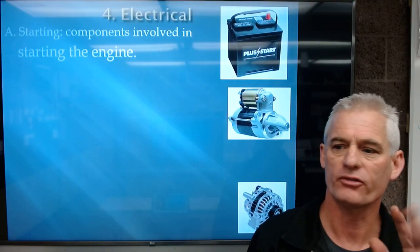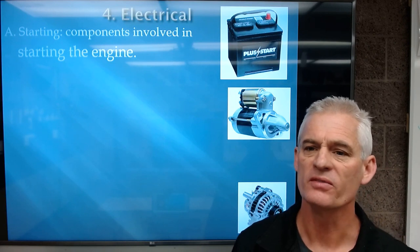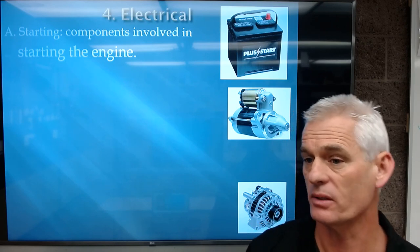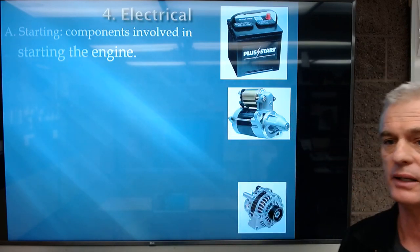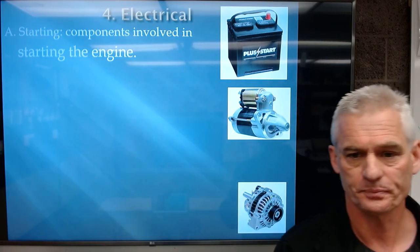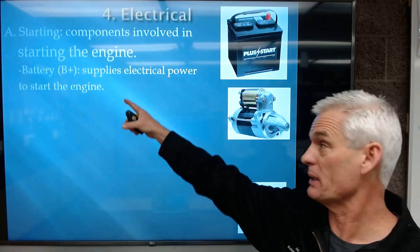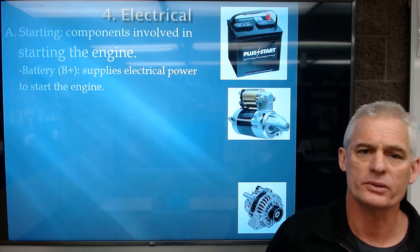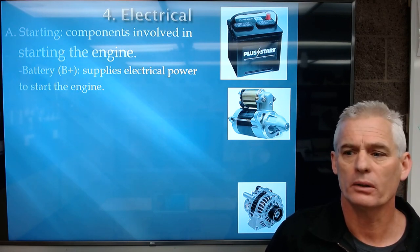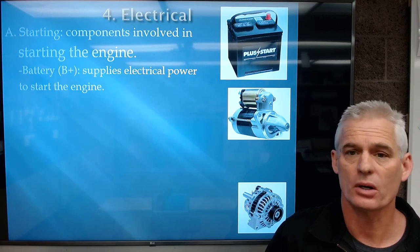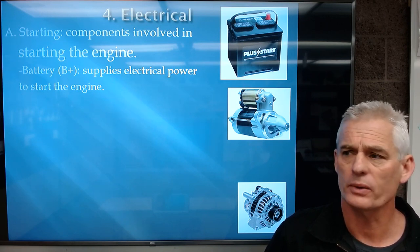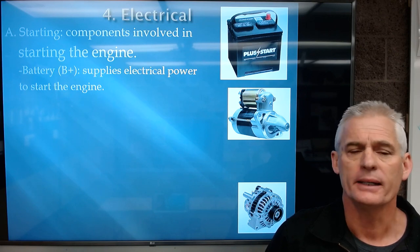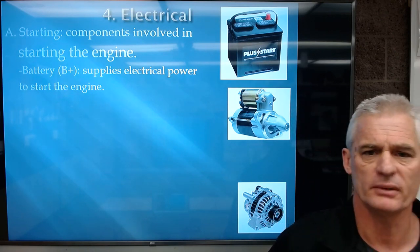Next we want to look at our fourth major category of the vehicle: electrical. Electrical includes a number of subsystems. The first is the starting system — all the components involved in starting the engine: a battery and a starter motor. The battery, which I'll call B-plus, supplies all the electrical power to start the engine. The major electrical load on the battery is the starter motor turning the engine over. Most cars will draw somewhere between 110 to 150 amps when cranking the engine over.